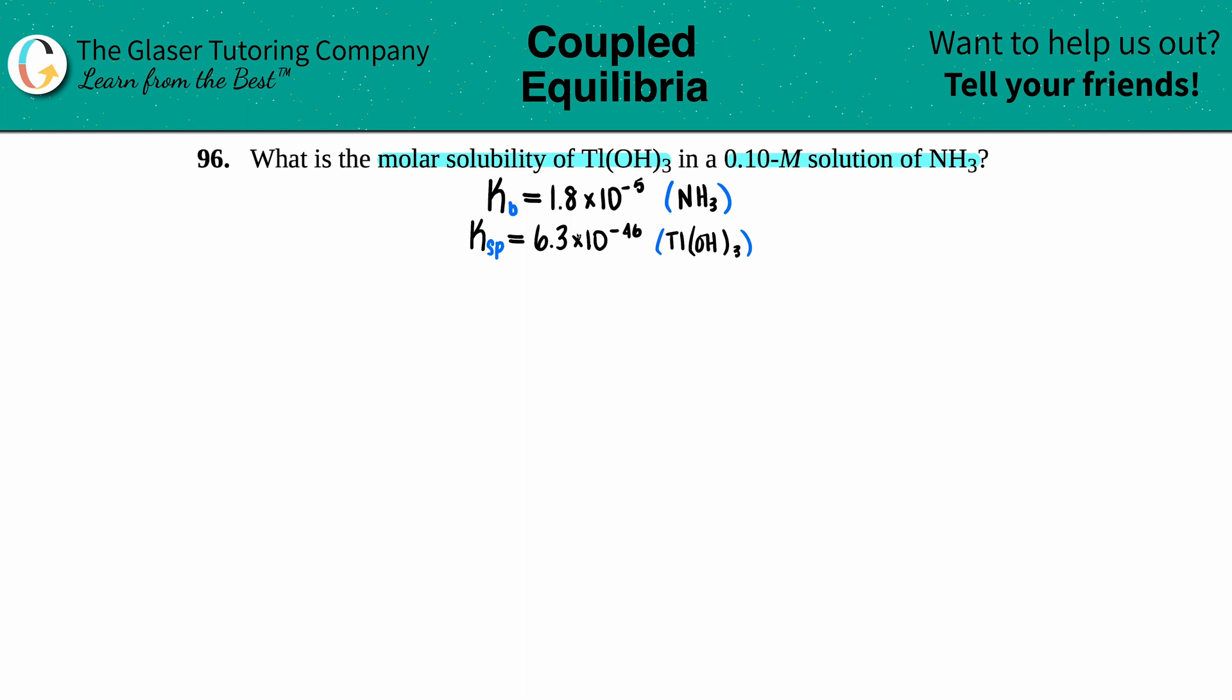But what is a Ksp without its balanced equation? So I'm just going to write the balanced equation out for Tl(OH)₃. Keep in mind that with Ksps you're always starting with your compound and that is the solid, because this is going to dissociate or break down into its two ions.